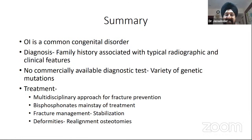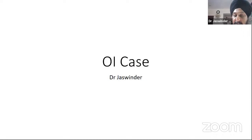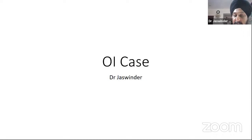In summary: osteogenesis imperfecta is a common congenital disorder diagnosed based on family history with typical clinical and radiographic features; no commercially available diagnostic test exists due to genetic mutation variety. Treatment requires a multidisciplinary approach — bisphosphonate is the medical mainstay, fractures are stabilized with telescopic or non-telescopic IM rods, and deformities may require realignment osteotomies.